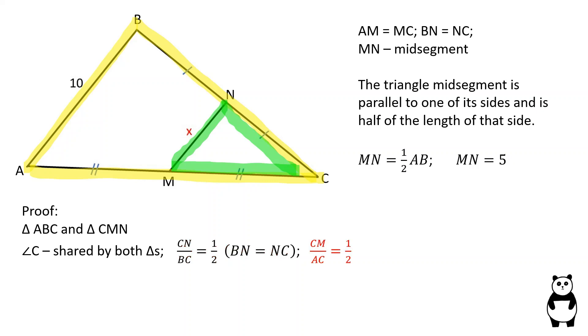CM over AC is equal to 1 over 2, because CM is equal to MA.